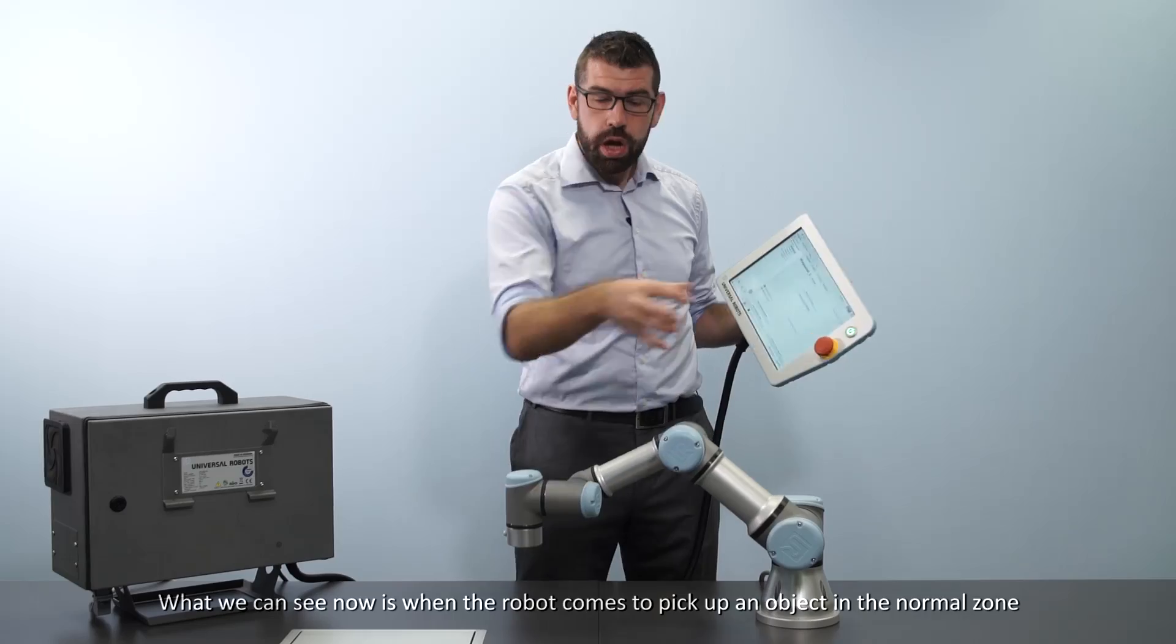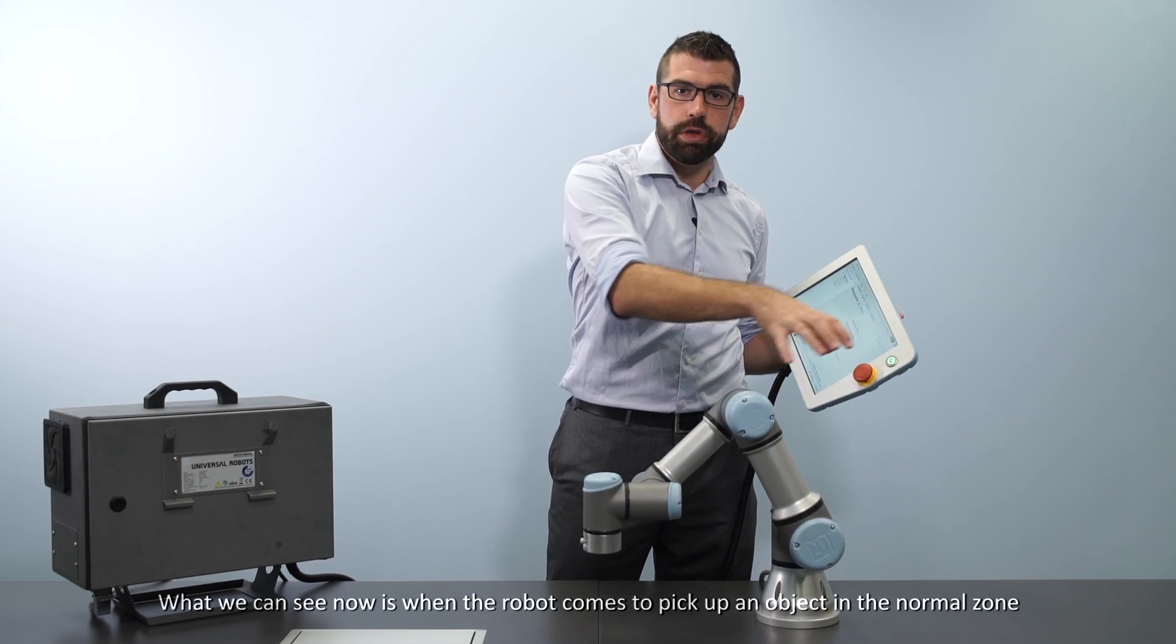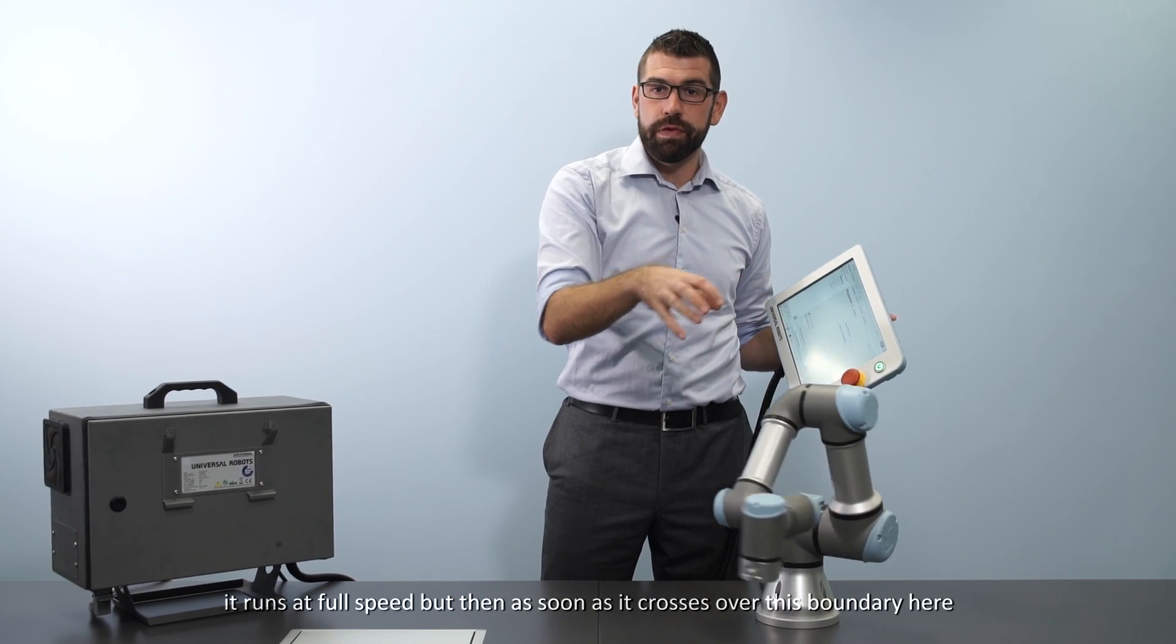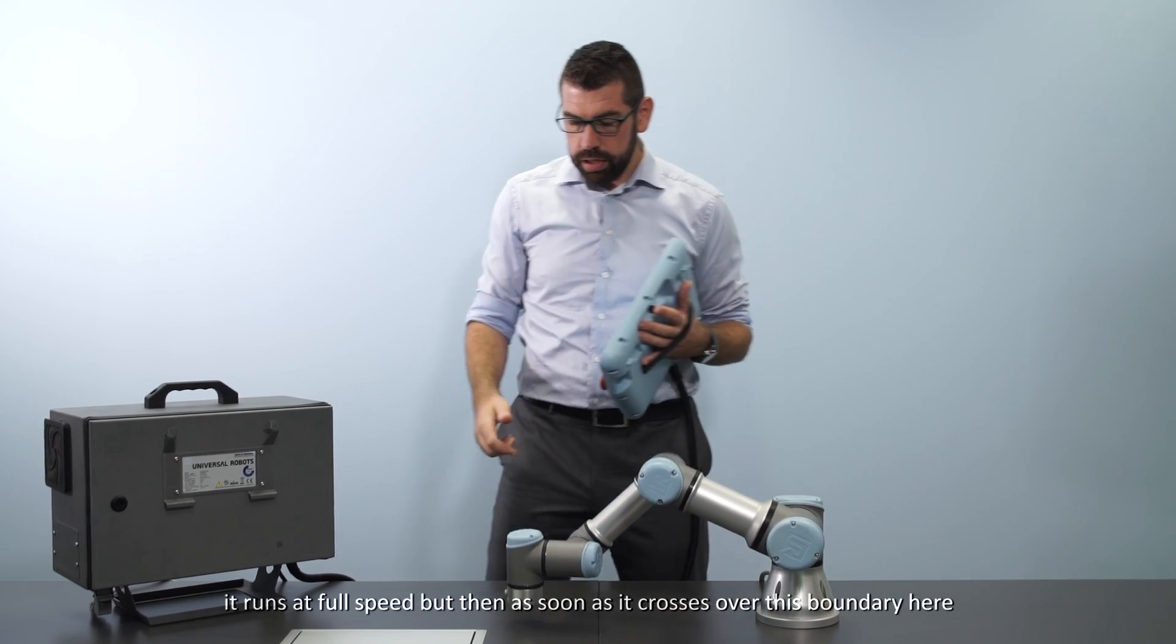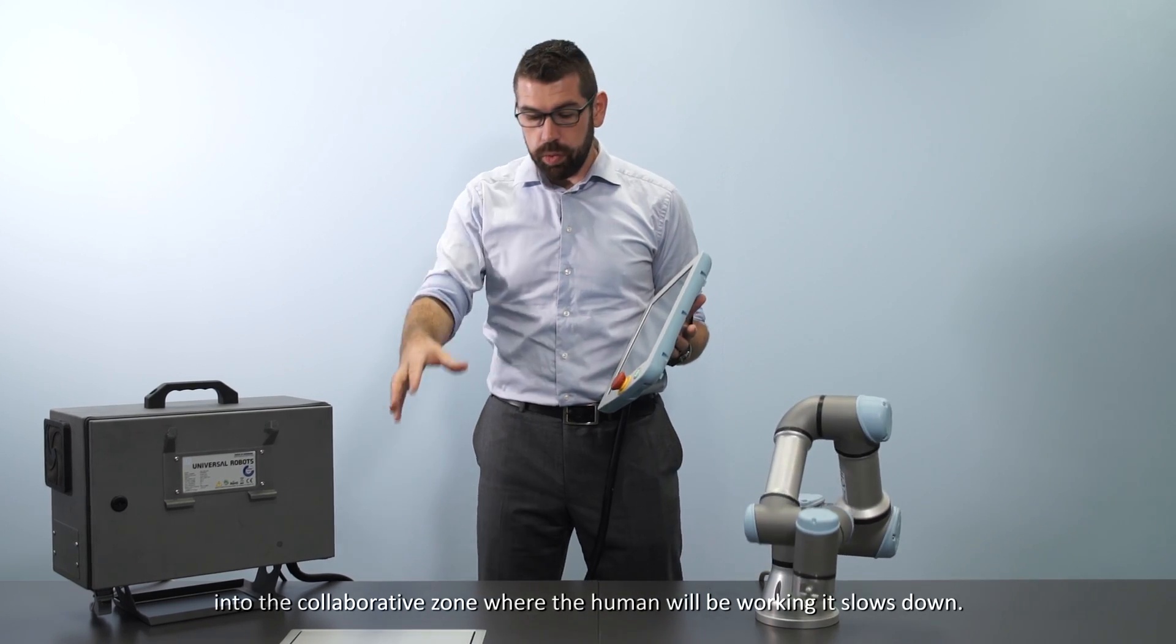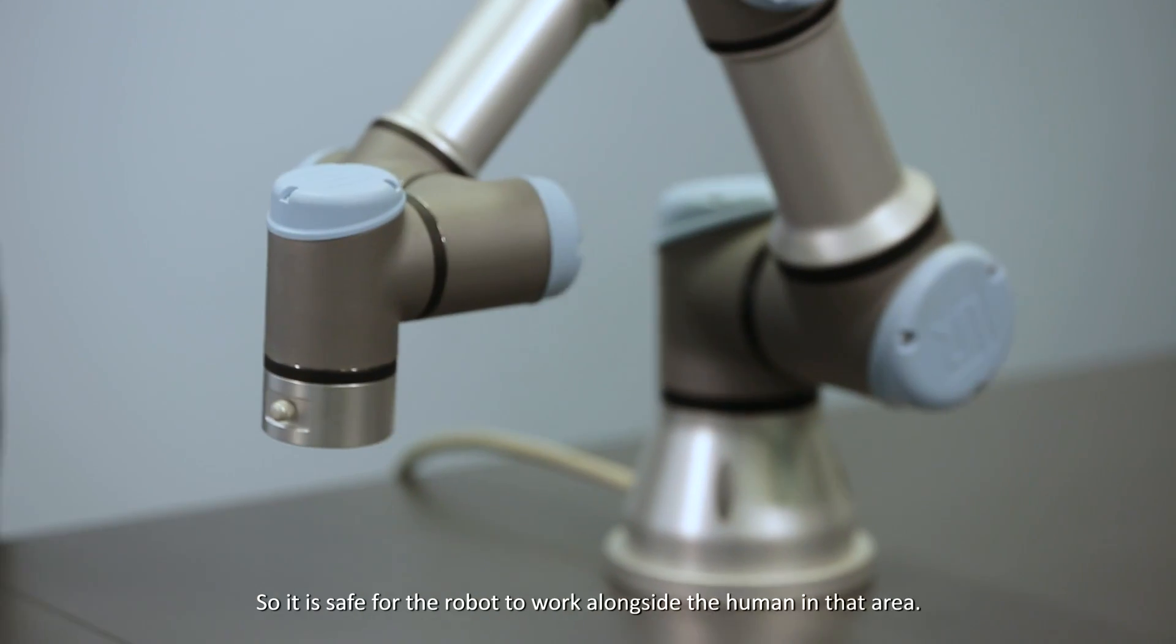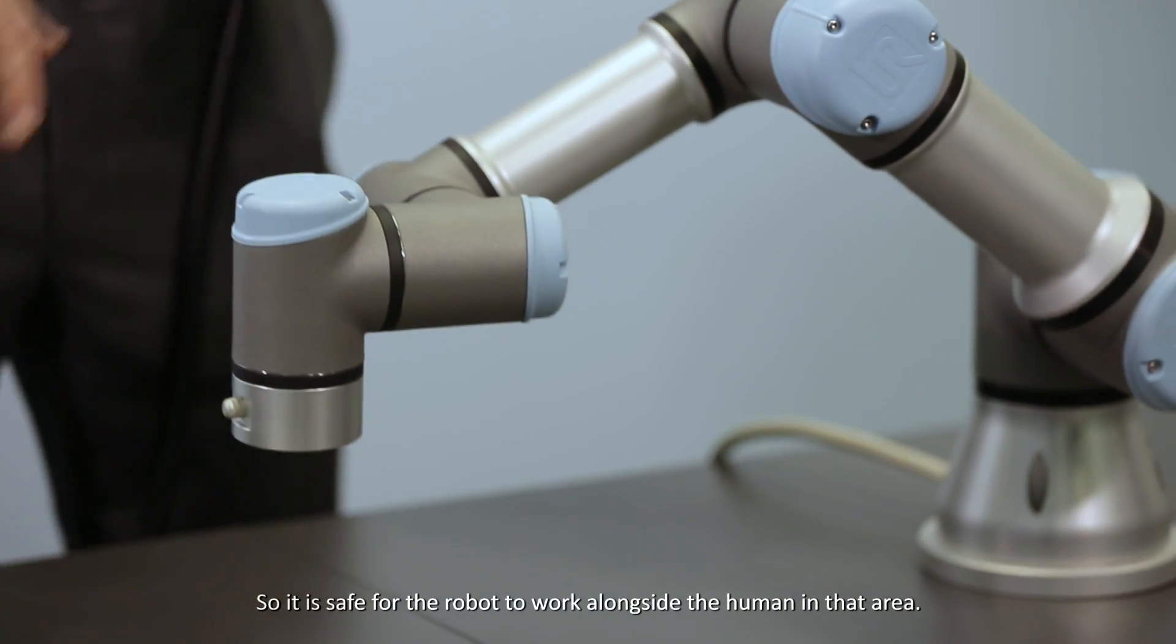And what we can see now is when the robot comes to pick up an object in the normal zone it runs at full speed, but then as soon as it crosses over this boundary here into the collaborative zone where the human will be working, it slows down. So it is safe for the robot to work alongside the human in that area.